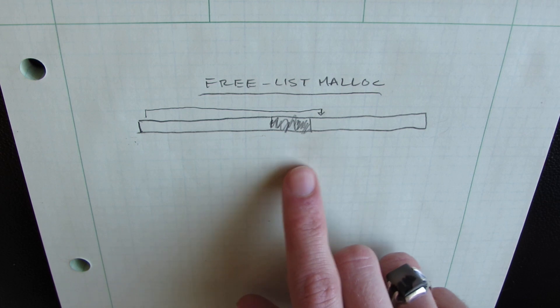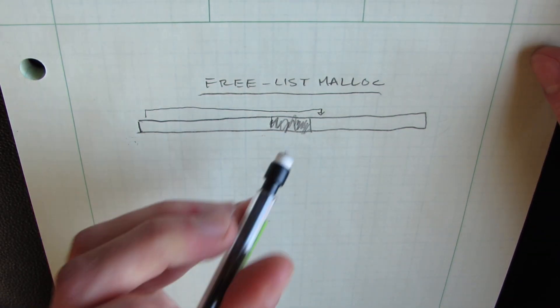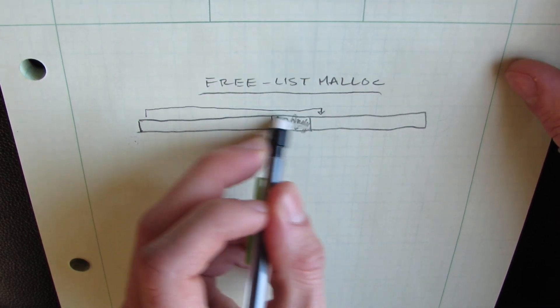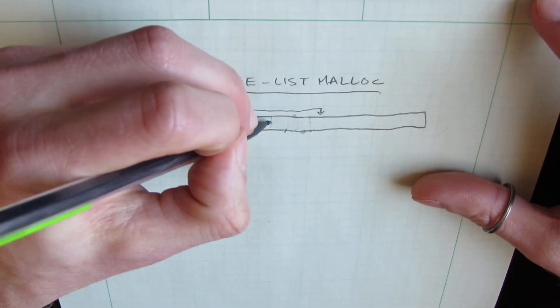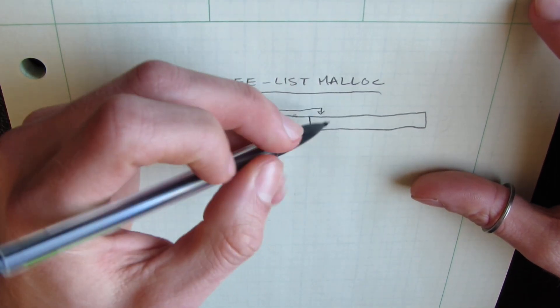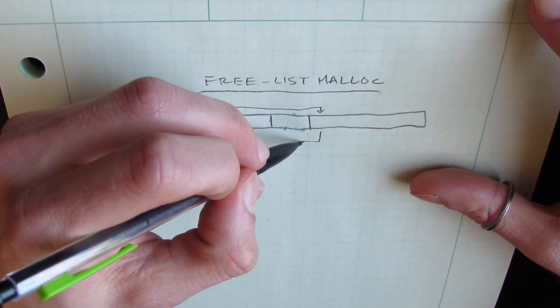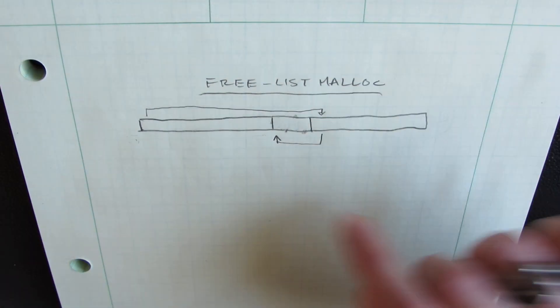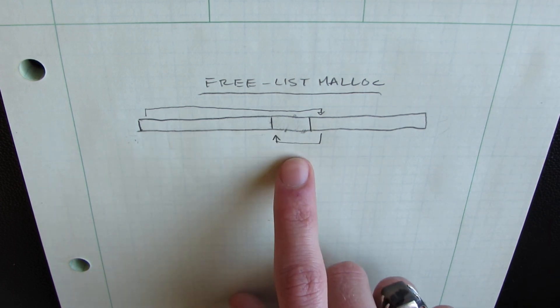And if some portion of memory is added to that linked list, so let's say this part of memory is freed here that was previously allocated, it will get added to the linked list. So there will actually be a pointer in the linked list that appends or prepends this to our linked list.